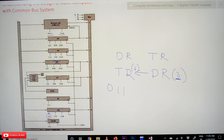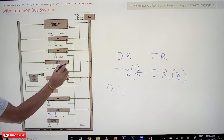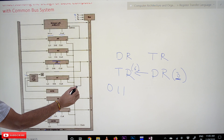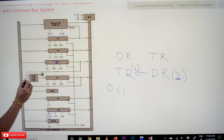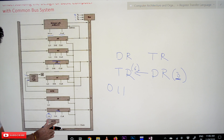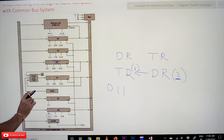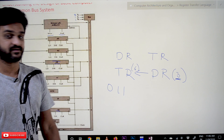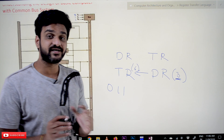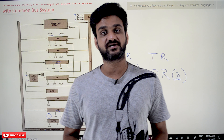Apart from the memory, we have the adder and logic unit. The output of the data register and another register are both connected to the adder and logic unit. There are also small 8-bit registers: INPR (input register) and OUTR (output register). The input register is connected to the ALU. These are the interconnections between the components of the basic computer.